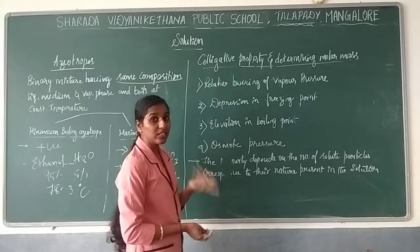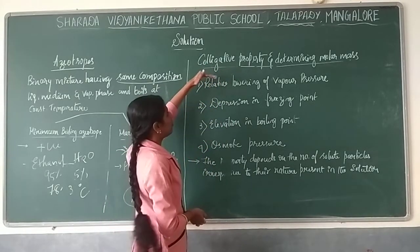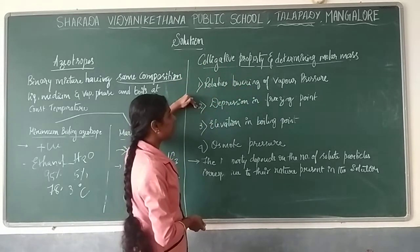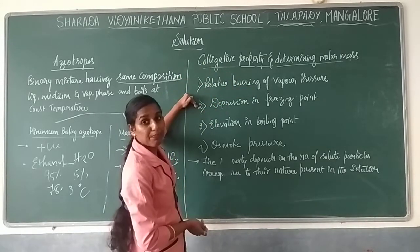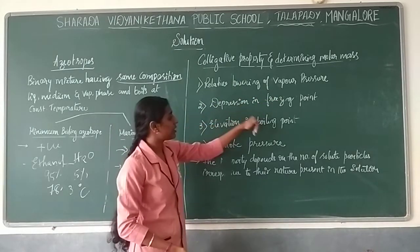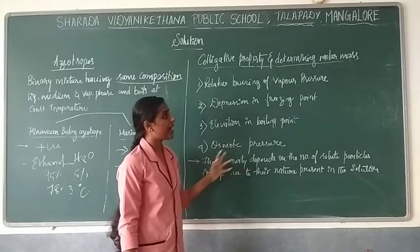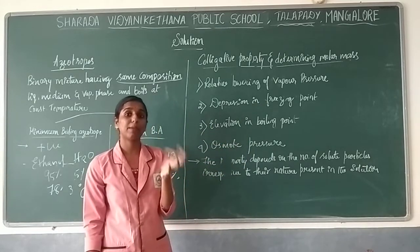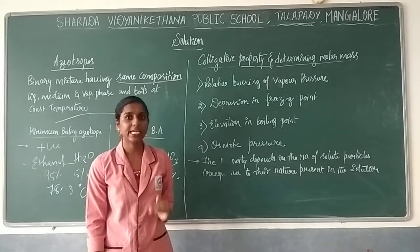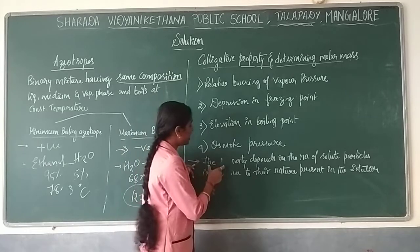There are four factors related to the decrease in vapor pressure: (1) relative lowering of vapor pressure, (2) depression in freezing point, (3) elevation in boiling point, and (4) osmotic pressure. These are the colligative properties, and the mixture's vapor pressure gradually decreases due to these factors.